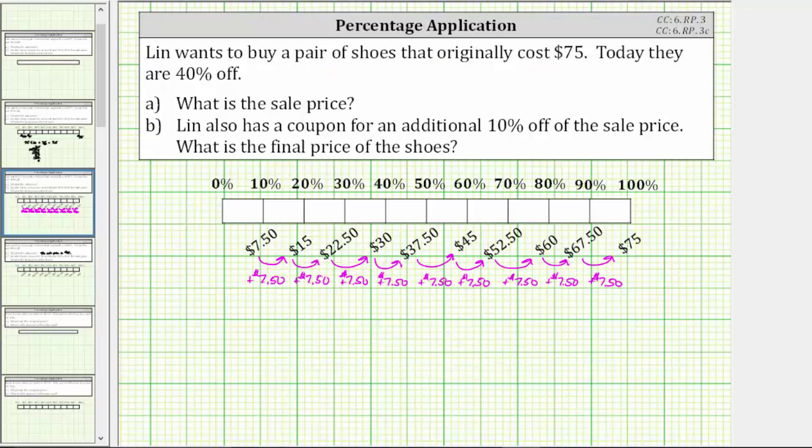Looking at the tape diagram, notice 60% of $75 is $45. So the sale price is $45.